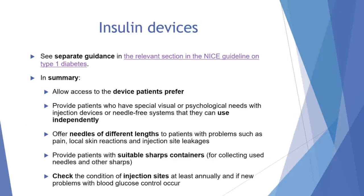We need to monitor patients on a basal insulin regimen — NPH, insulin detemir or glargine — for the need of short-acting insulin before meals, including pre-mixed biphasic insulin. We also need to monitor patients on pre-mixed biphasic insulin for the need of a further injection of short-acting insulin before meals or a change to a basal-bolus regimen. For insulin delivery, patients should have access to their preferred device, and those with special visual or psychological needs should have appropriate injection devices or needle-free systems. Needles of different lengths should be offered for problems such as pain, local skin reactions, or injection site leakage. Patients should be provided with suitable sharps containers, and injection sites should be checked at least annually.